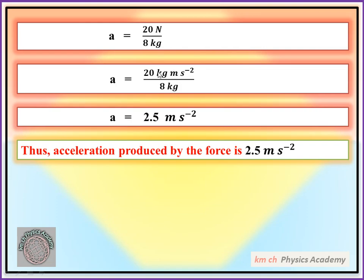The kilogram cancels out, leaving meter per second square. 20 divided by 8 equals 2.5 meters per second square. This means the acceleration of the body is 2.5 meters per second square.